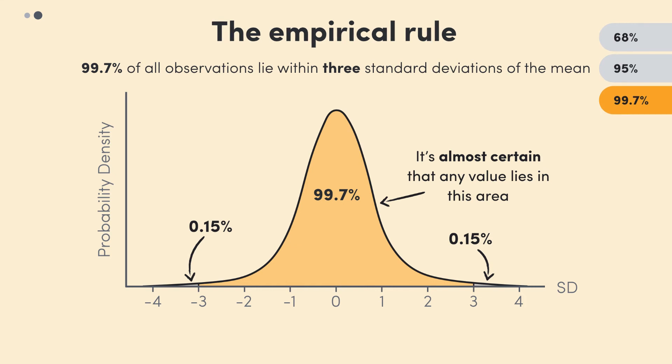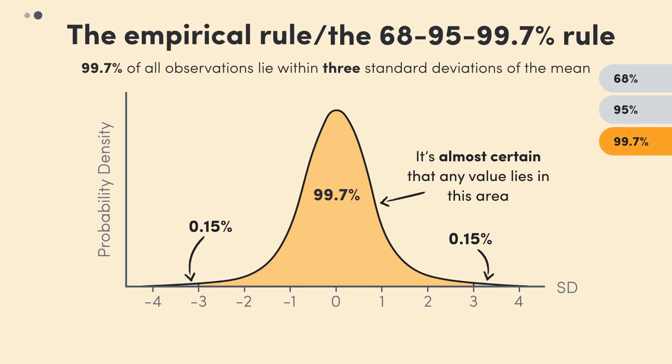So that's why you might also see the empirical rule being called the 68, 95, 99.7% rule, because these are the percentages that lie between one, two or three standard deviations either side of the mean respectively.